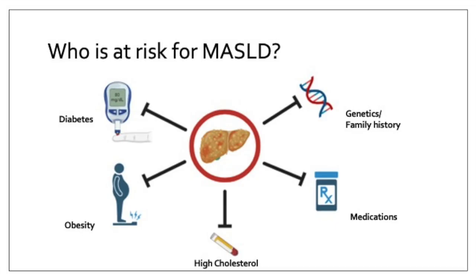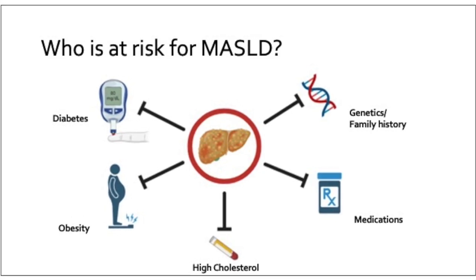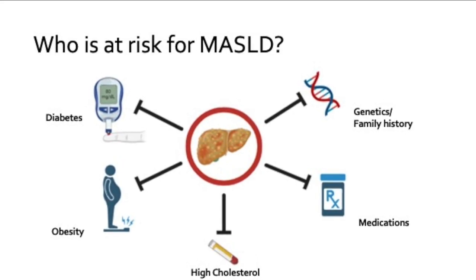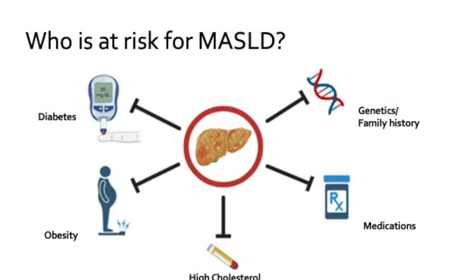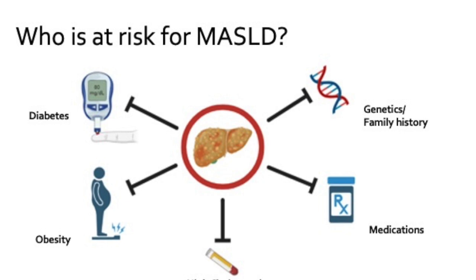MASH is very much a metabolic process — part of the reason why we changed the name. Just like diabetes, high blood pressure, high cholesterol, sleep apnea, and heart disease, all of these are metabolic processes, and MASH is the metabolic process that occurs in the liver. It's really very much related to diet and obesity — we know those play a big role in the risk for patients to develop fatty liver disease. Now there is some genetic component as well, and there are a small percentage of patients with MASH who are not overweight or don't have obesity. But for the majority of patients, it's really related to weight and diet.